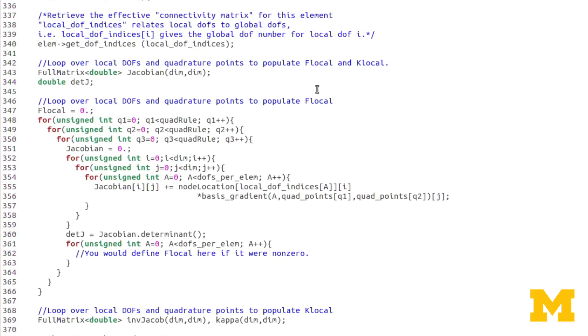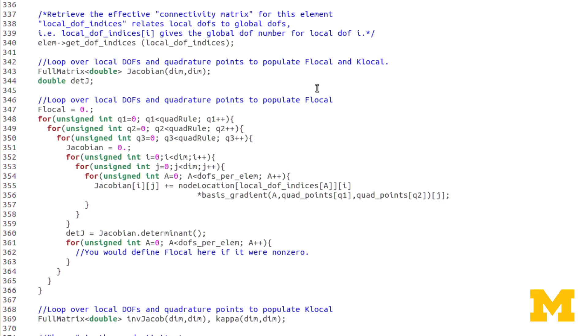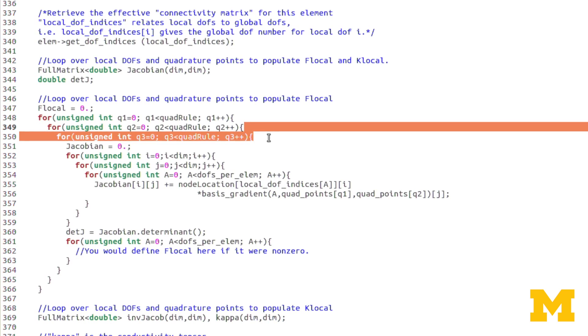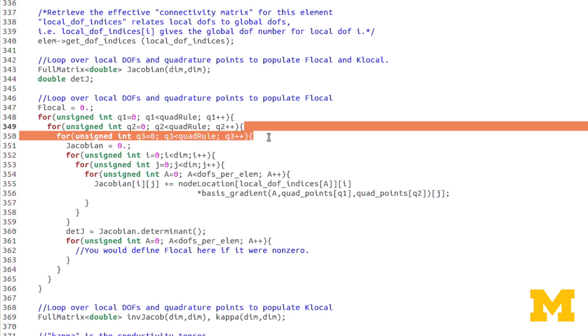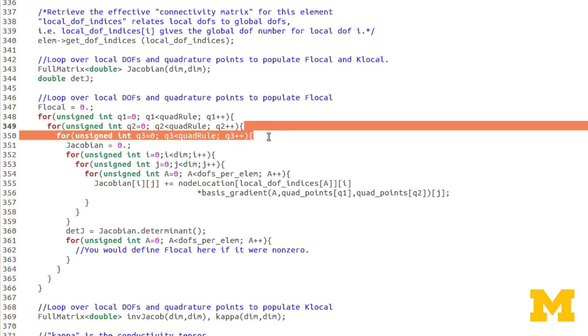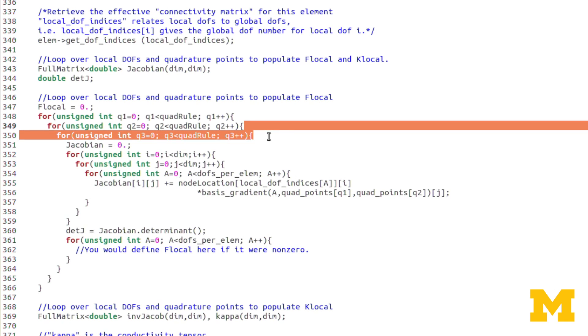Assemble system is, again, very similar. The main difference here is that, since it's 3D, we have three loops over the quadrature rule. So again, this is that sort of tensor product idea with the quadrature points. Each quadrature point, technically, now becomes a 3D object. But by looping over the 1D rule three times, we find all those combinations of quadrature points.